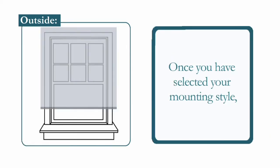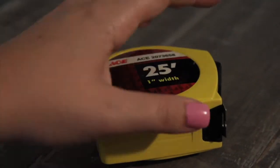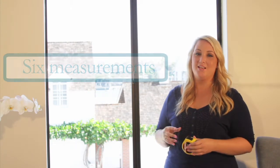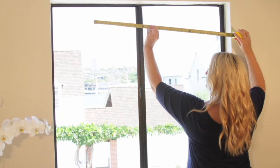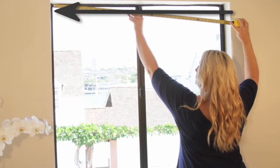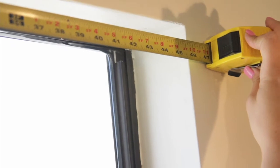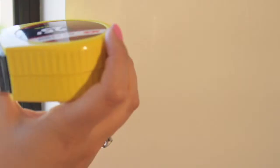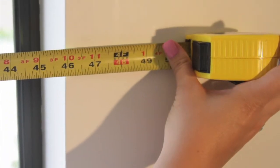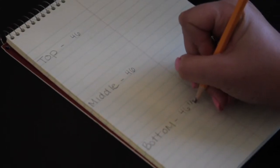Once you have selected your mounting style, you'll want to grab a steel measuring tape so we can begin. If you've chosen an inside mount, we'll take six measurements — three across and three from top to bottom. Start by measuring the top of the window frame horizontally, then take the same measurement for the middle and bottom. Round to the nearest eighth of an inch, then take the smallest measurement of the three. This will be your width measurement.